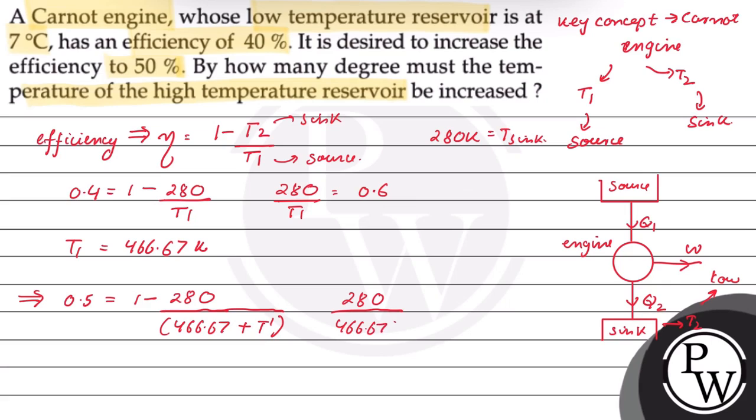So 466.67 plus T' divided by... So the net T' is equal to 93.33 Kelvin.